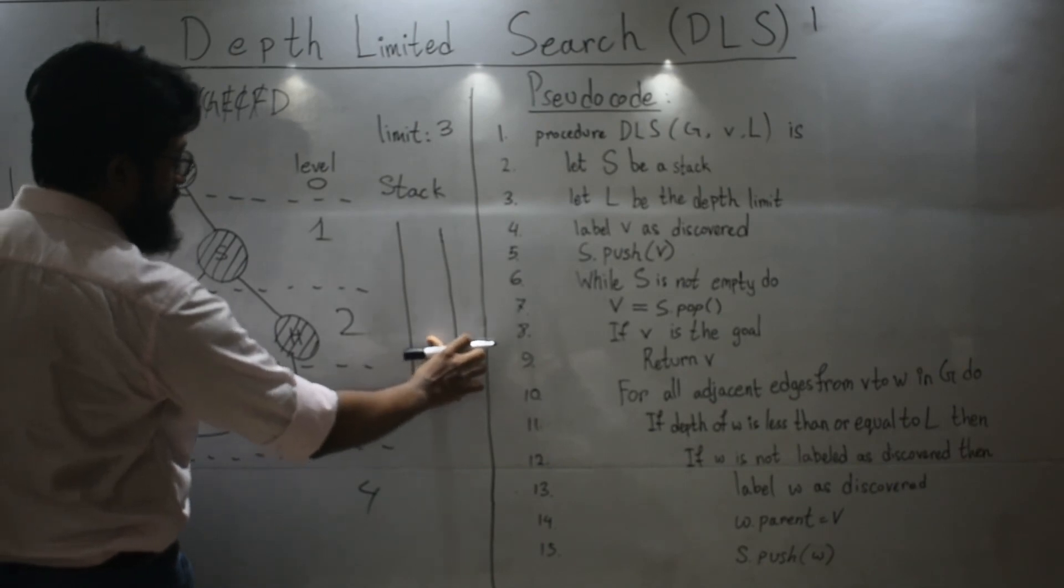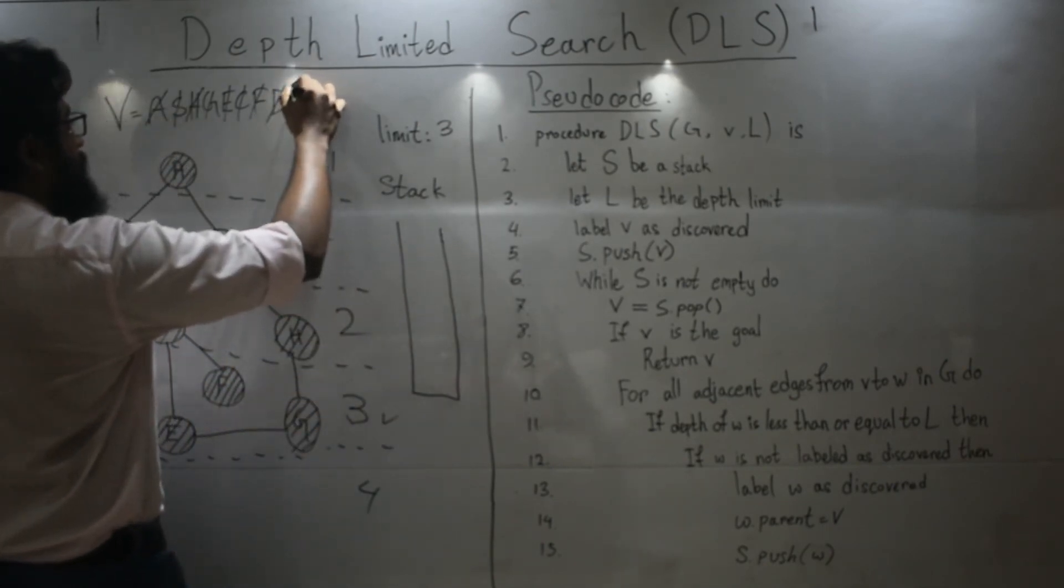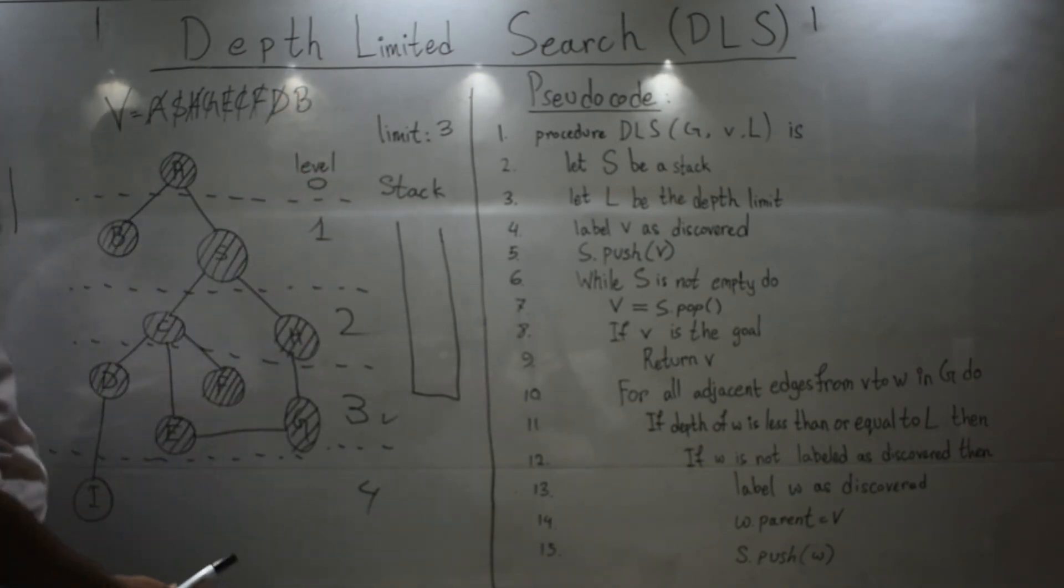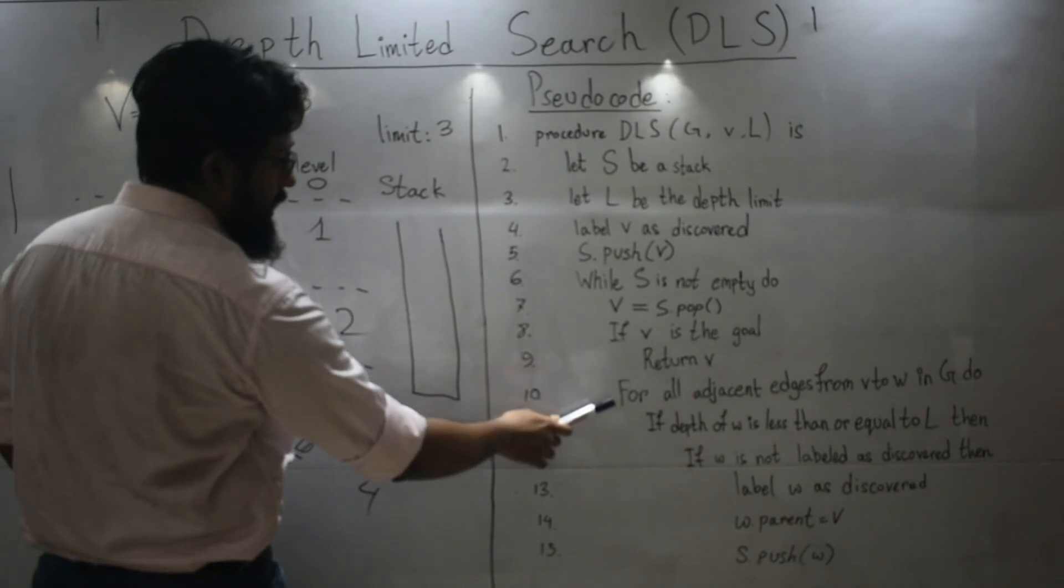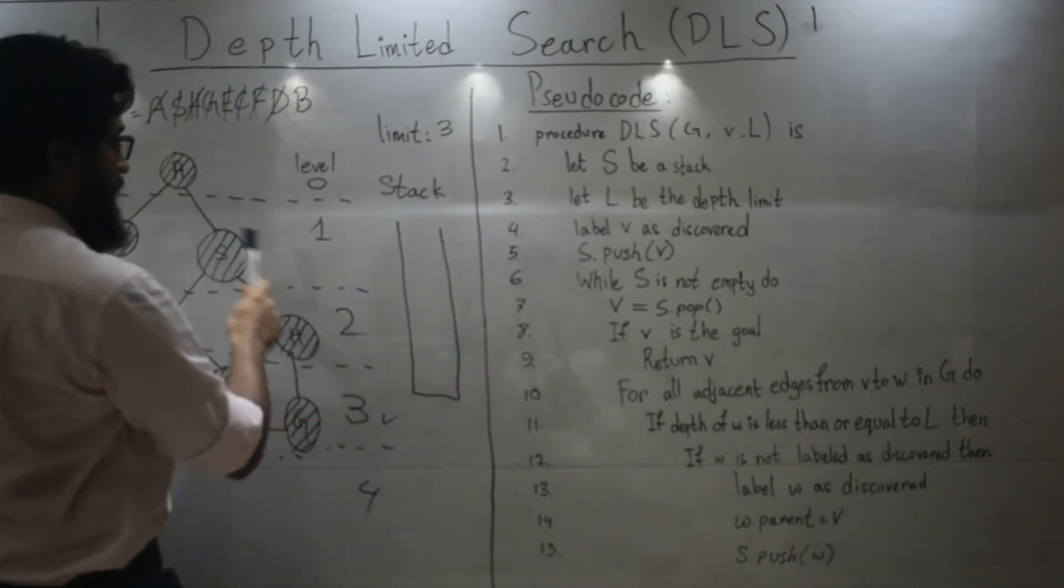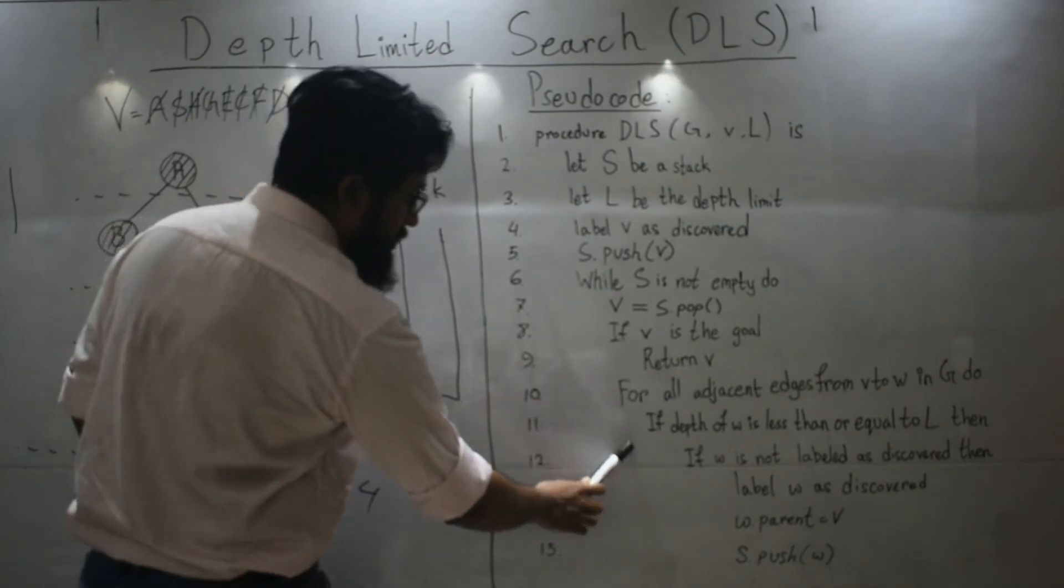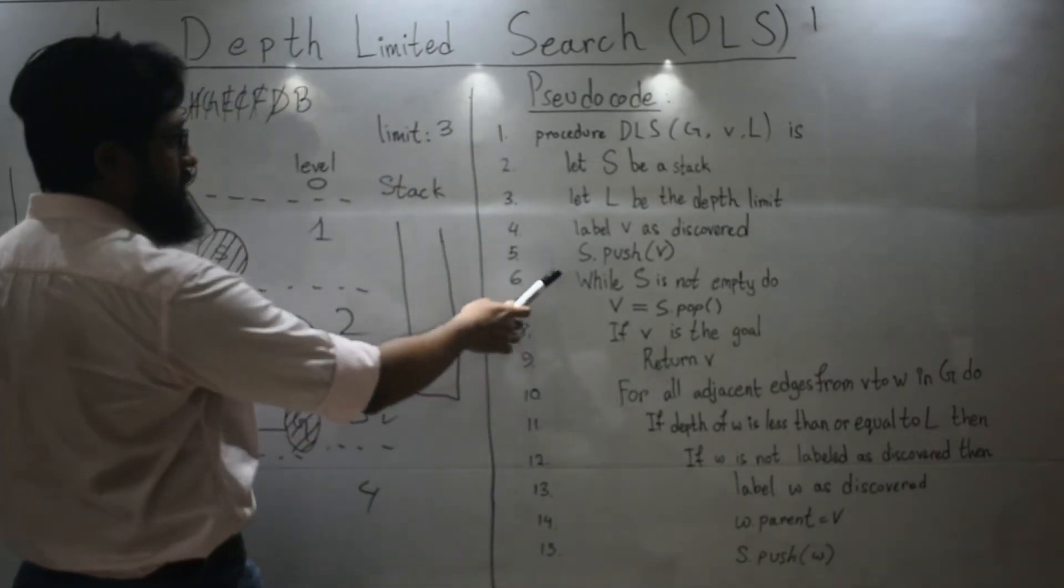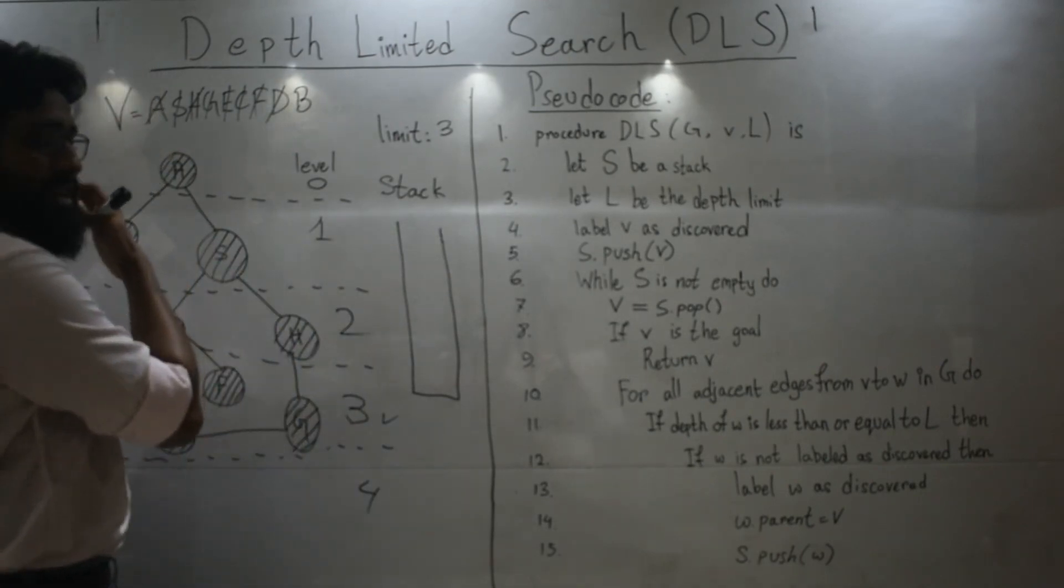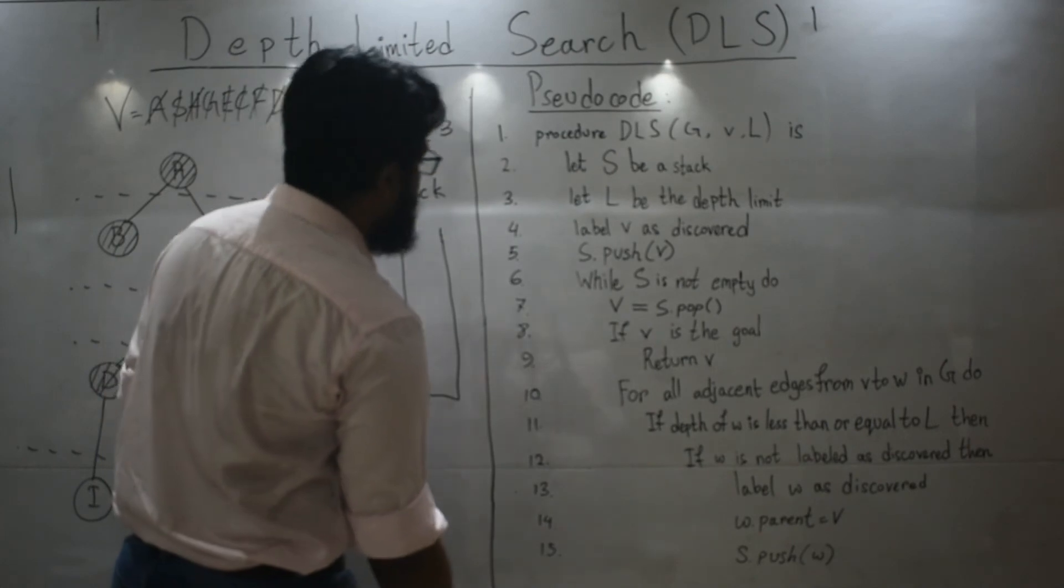It will come back to line 7 and pop. So top of the stack we have B. Let's pop B. We have popped B and the neighbors of B have already been visited. So we'll skip all these and at the end we will see that the stack is right now empty. So we will also exit this while loop.